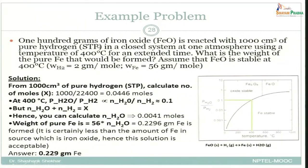The example is related to oxide reduction. We have 100 grams of iron oxide (FeO) reacted with 1000 cm³ of pure hydrogen in a closed system at one atmosphere and a temperature of 400°C for an extended time. The question is: what is the weight of pure Fe that would be formed?